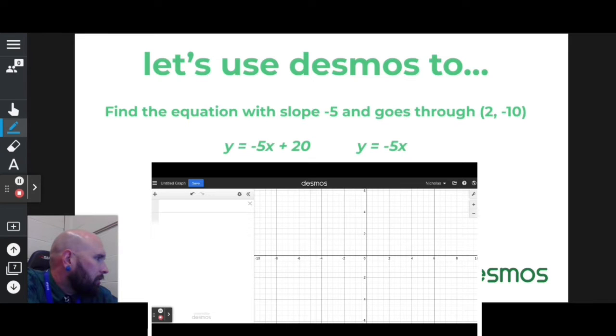Both of these equations have a slope of negative 5, so I'm going to type out one of them. I'll type out the first one, y equals negative 5x plus 20, and see if it goes through the point (2, -10).